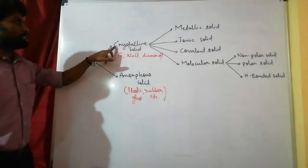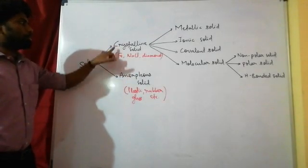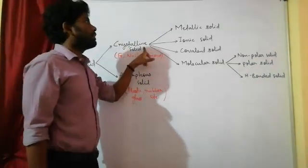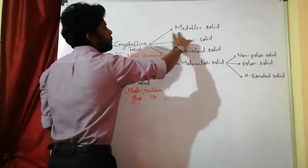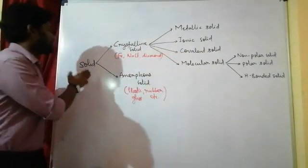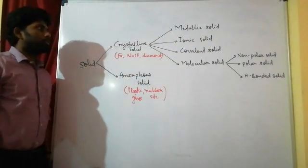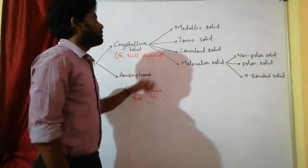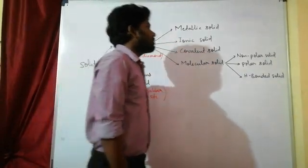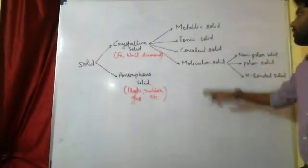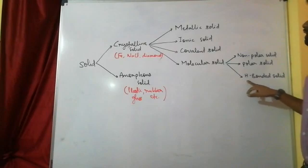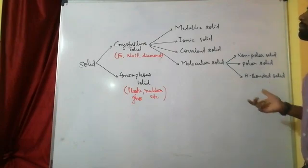Crystalline solids are further divided into 4 sections: metallic solid, ionic solid, covalent solid, and molecular solid. The molecular solid is further divided into 3 categories: non-polar molecular solid, polar molecular solid, and hydrogen-bonded solid.